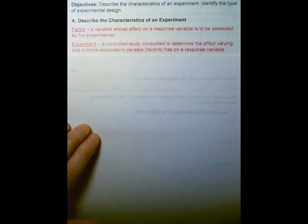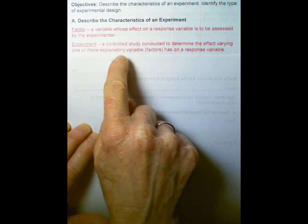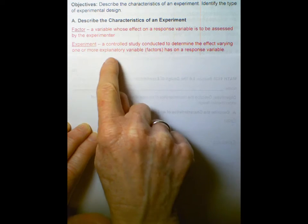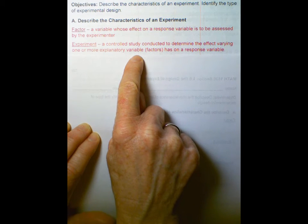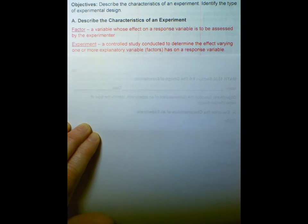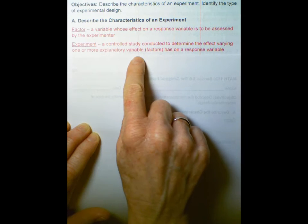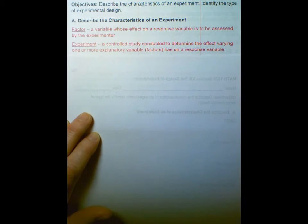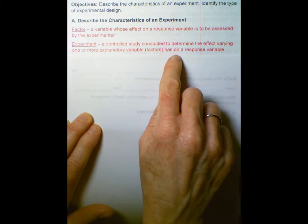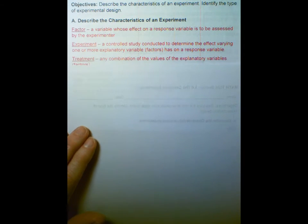Experiment. A controlled study conducted to determine the effect varying one or more explanatory variables, which are factors, has on a response variable. So the thing that affects our response variable is an explanatory variable. A factor is an explanatory variable. What is the effect that it has on the response variable?